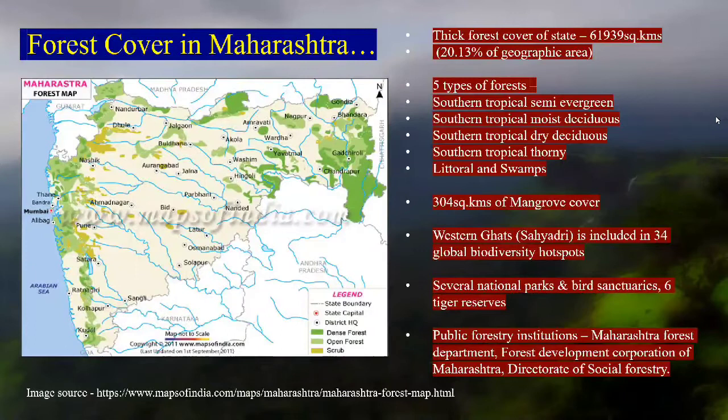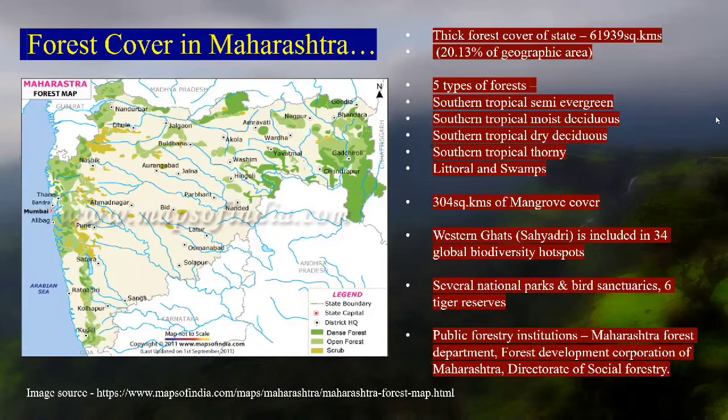The forest types include southern tropical semi-evergreen, moist deciduous, tropical dry deciduous, tropical thorny forest in very few areas, and littoral and swamp areas — all very unique habitats. As per mangrove cover, Maharashtra has almost 300 square kilometers.